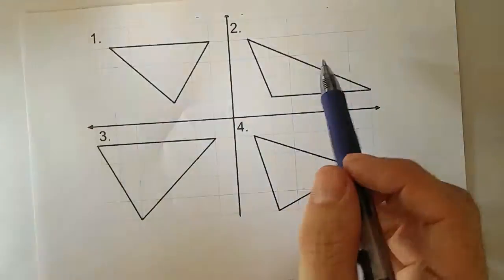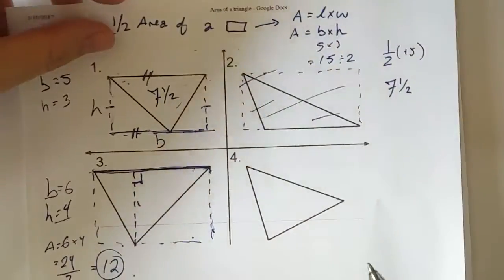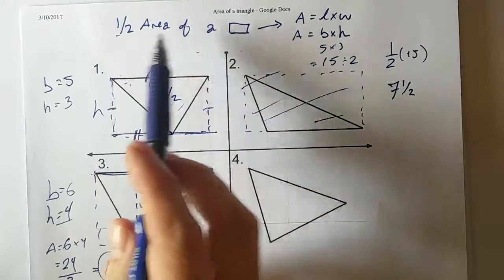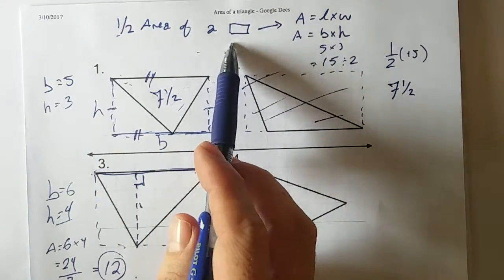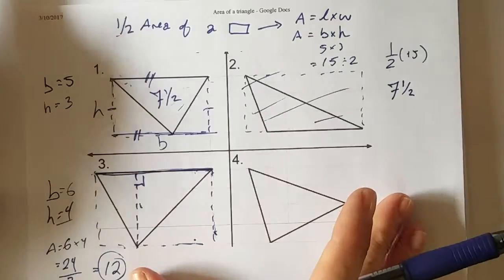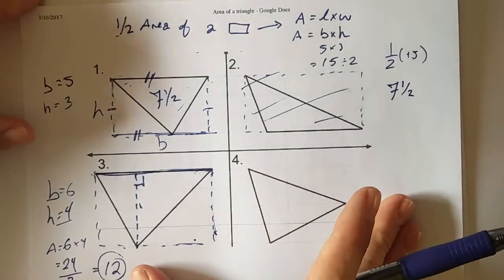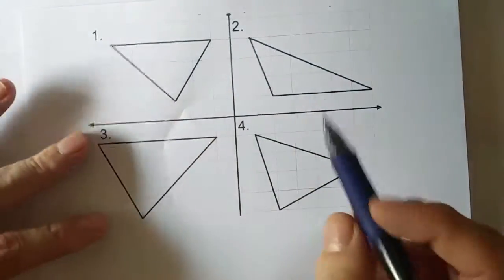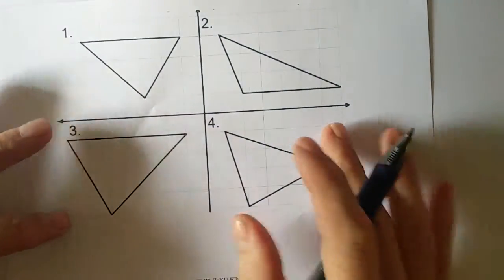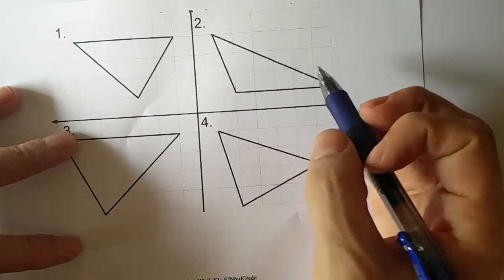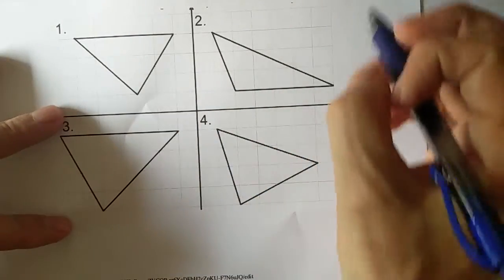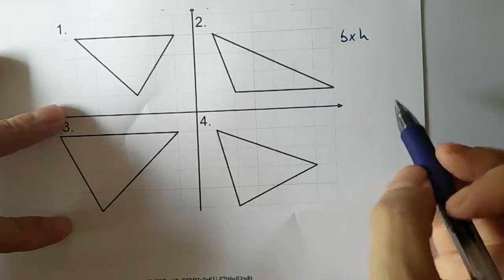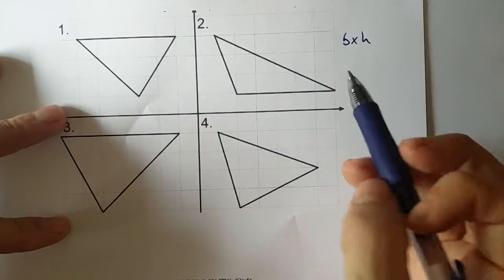Now that we've looked at the concept that the area of a triangle is half the area of a rectangle, let's put that into straight practical use. In this obtuse scaling one, I'm going to have to take the area of my rectangle, which is the base times height, and in this one it's a little tricky.